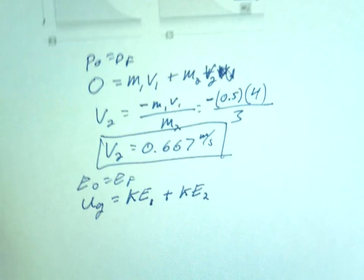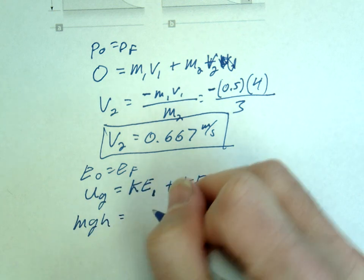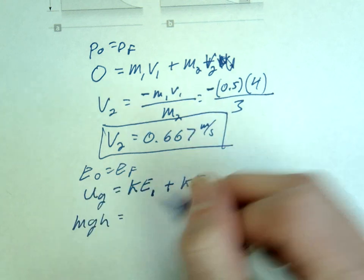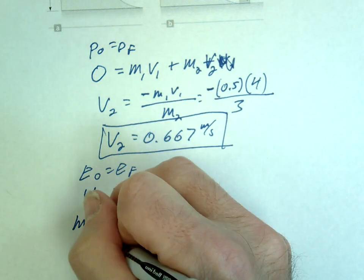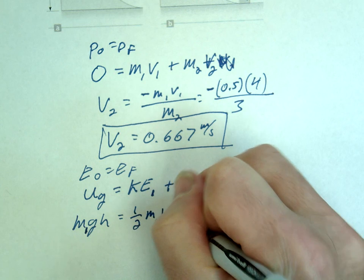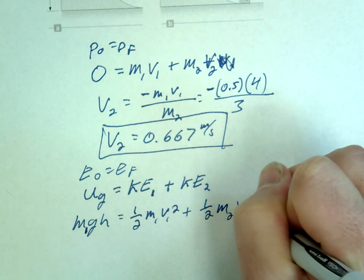We'll just go ahead and solve this. So this is MGH. Which M? This is important. Which M starts with it? The block. So that's M1. So that's going to be 1 half M1 V1 squared plus 1 half M2 V2 squared.